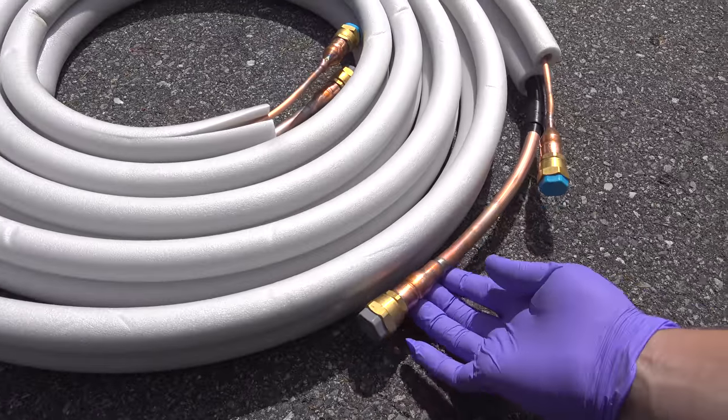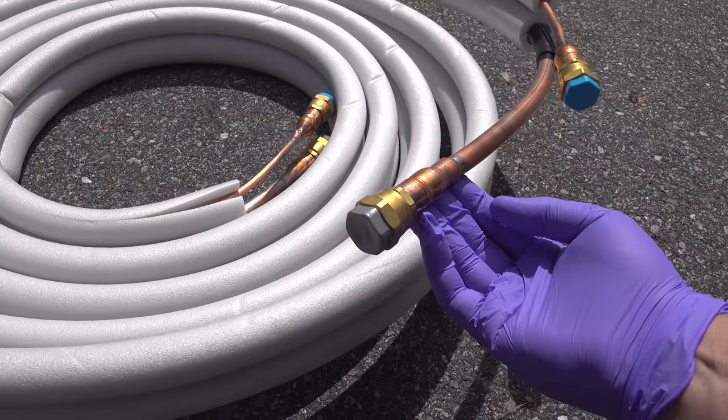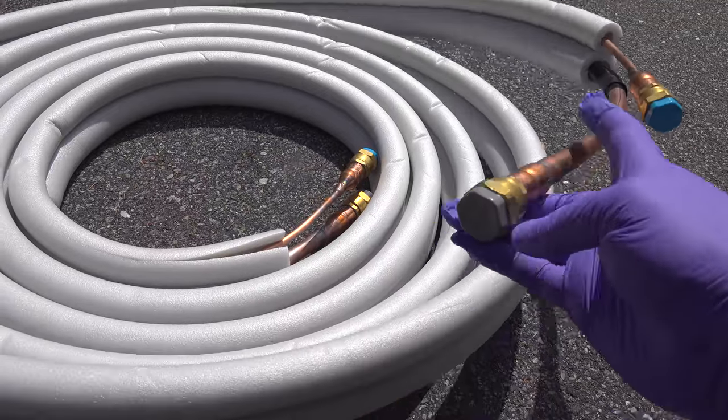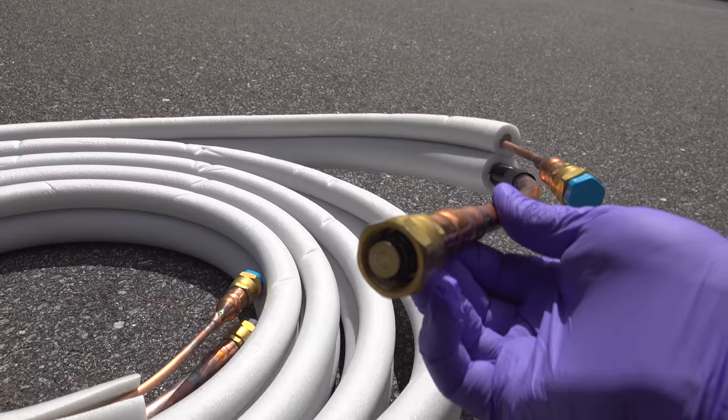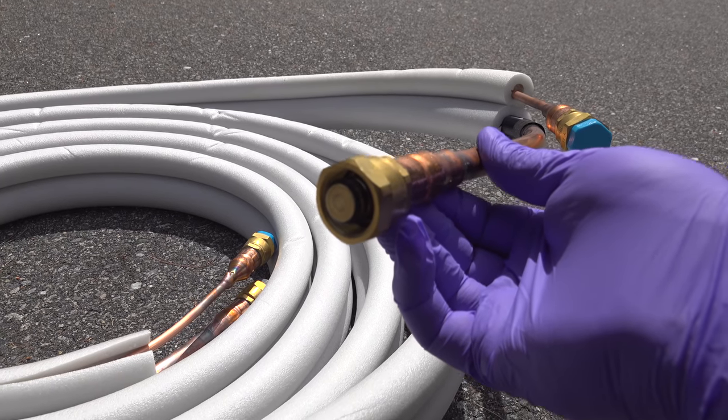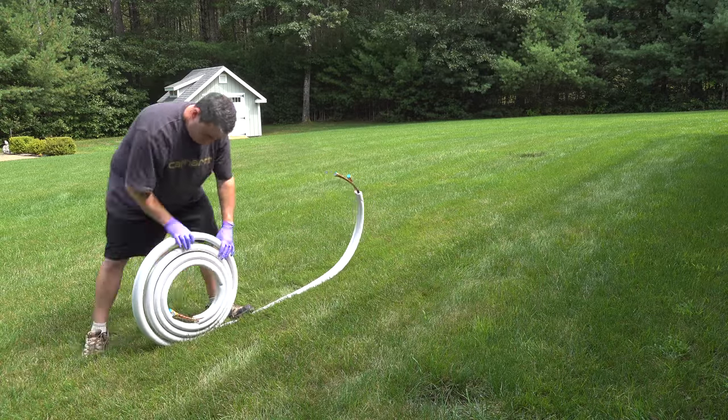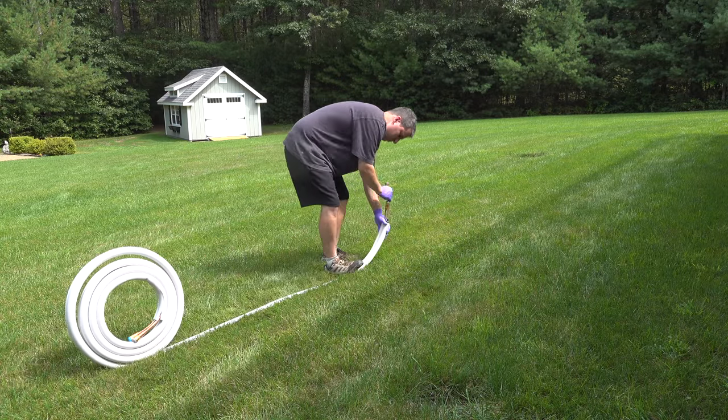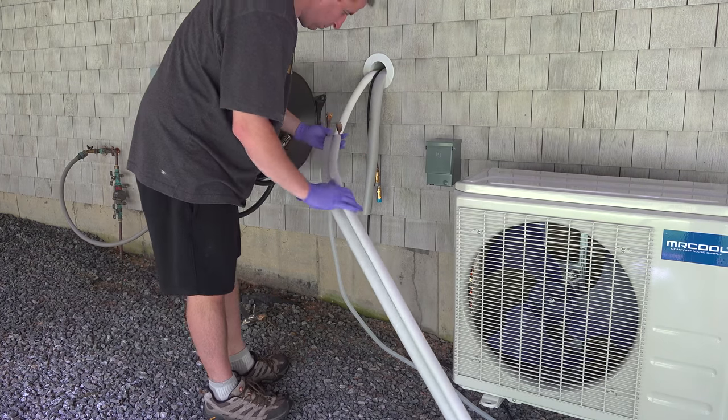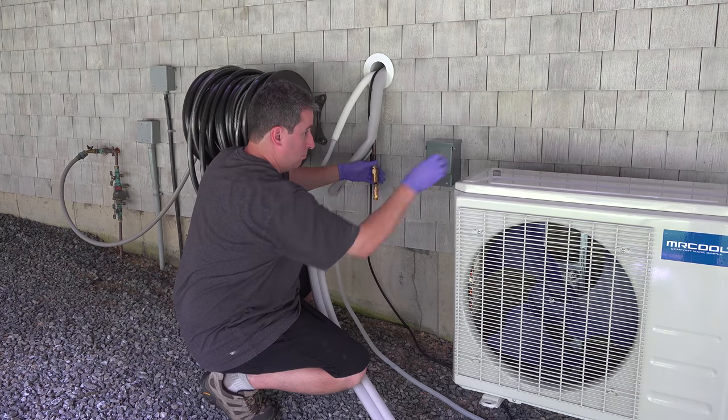The reason this thing is so popular with DIYers is that you can do the entire job yourself because this system is already pre-filled with Freon. Not just the main system but these lines themselves have Freon in them. Those little caps you saw at the end are covering a valve and those valves hold the Freon in these pipes until they're connected up. And you don't need to use any type of vacuum pump to get the system going.